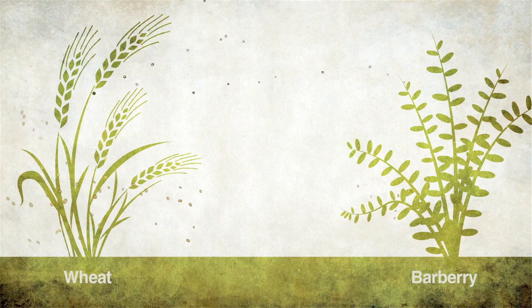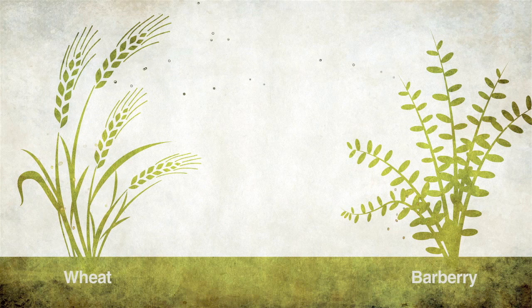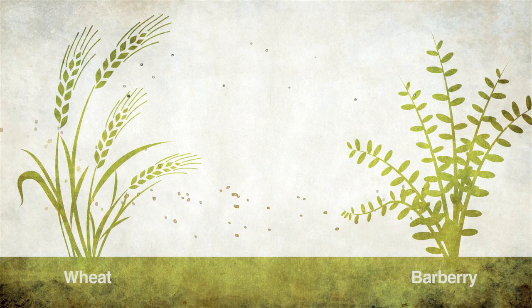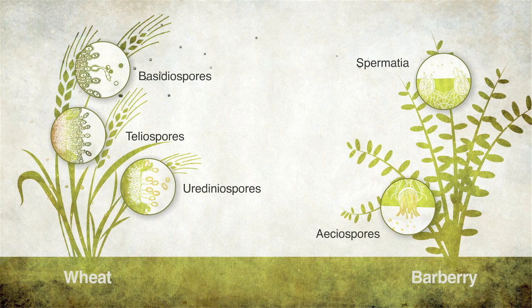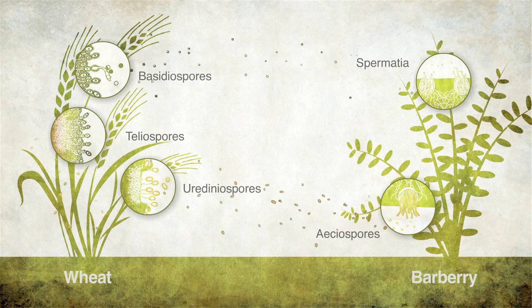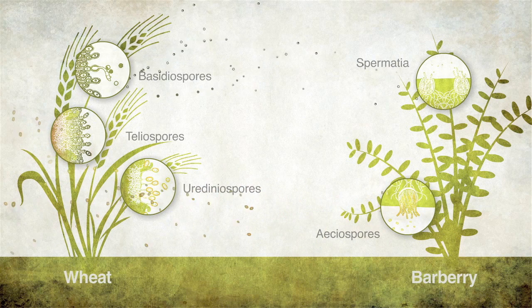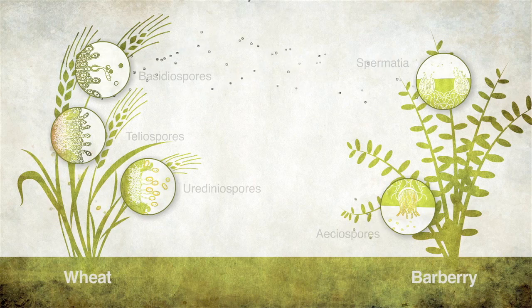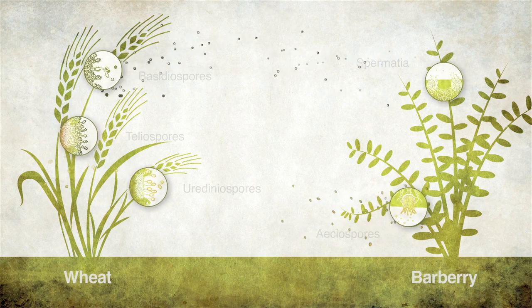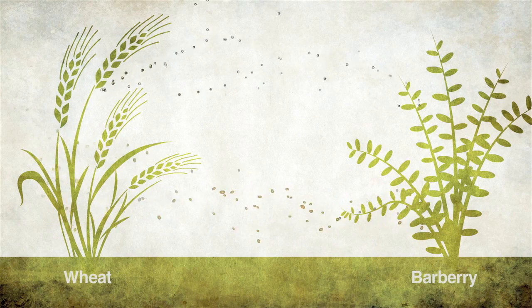It is during the barberry-hosted phase of its life cycle that the stem rust pathogen undergoes sexual recombination. And as it turns out, barberries also serve as an alternate host for the wheat stripe rust pathogen, Puccinia striiformis. The sexual recombination of genetic material presents a powerful mechanism for the creation of new virulence within the wheat rusts. So although the barberry-hosted phases of the wheat rust life cycles are often obscure, it is important to understand them in order to develop better disease management strategies.